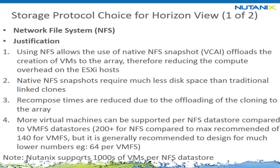To leverage VCAI we need to use NFS, so it's an easy justification to use NFS for Horizon View deployments. There are also a number of other benefits, including space savings with NFS snapshots. Recompose and refresh times are dramatically reduced and offloaded to the array. You can have a lot more virtual machines per NFS datastore compared to VMFS — greater than 200 is what VMware recommends for NFS, compared to a maximum of 140 for VMFS when VAAI is enabled. Without VAAI you can only have up to 64 VMs per VMFS due to SCSI reservation issues. Nutanix actually supports thousands of VMs per NFS datastore on our platform.